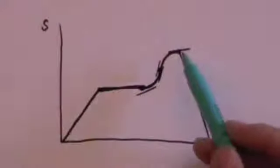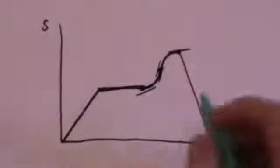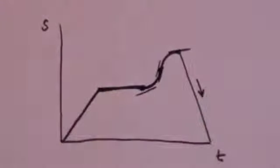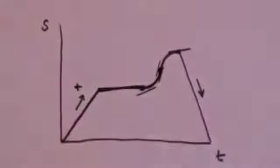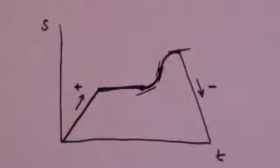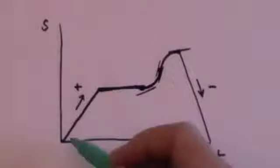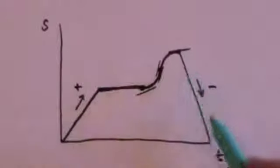Although we're going in the opposite spatial direction, we are still moving forward in time. Remember, you can never have a line going backwards in time. That would imply travelling backwards in time, which is not allowed. You can go backwards and forwards in space but never backwards in time.